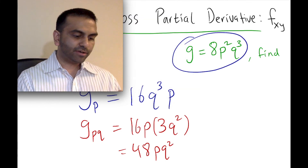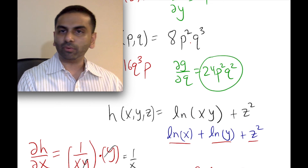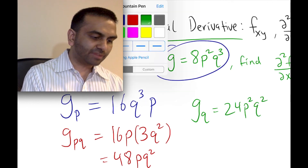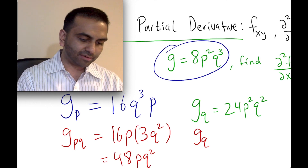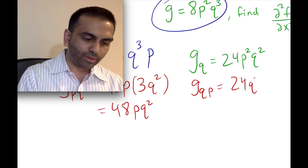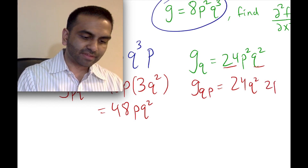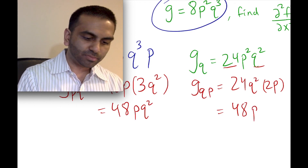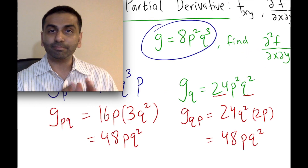Alternatively, starting with the derivative with respect to q gives 24p²q². Now taking the derivative of 24p²q² with respect to p: treat 24q² as the constant, so we have 24q² times the derivative of p², which is 2p. That gives 24 times 2 = 48, times p, times q² — so 48pq². Lo and behold, both orders give the same answer, 48pq², confirming that the order doesn't matter. That's how you do a cross-partial derivative.